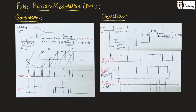it will produce positive voltage, and if the message signal is less than the carrier signal, it will produce negative voltage. So it will produce positive voltage for message signal greater than carrier signal and negative voltage for message signal less than carrier signal. If the message signal is more than carrier signal, it will produce positive signal; if message signal is less than carrier signal, it will produce the negative signal.